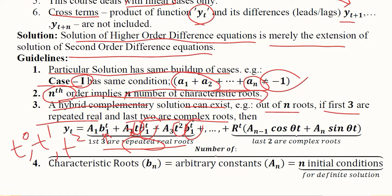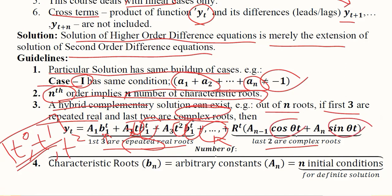This t gets introduced in the second and remaining terms for repeated real roots, as seen in the second-order difference equation with arbitrary constants a1 and a2. For the final roots — the second-to-last and last roots, which are assumed complex — they are represented with a sine and cosine formation, with a(n-1) and an as the arbitrary constants.